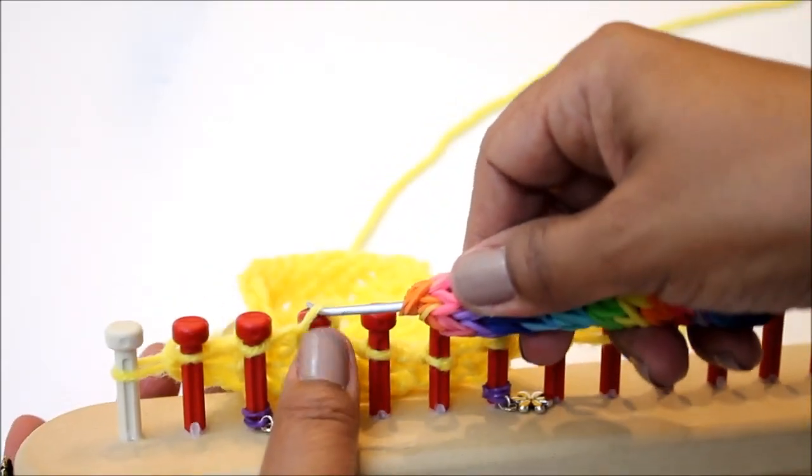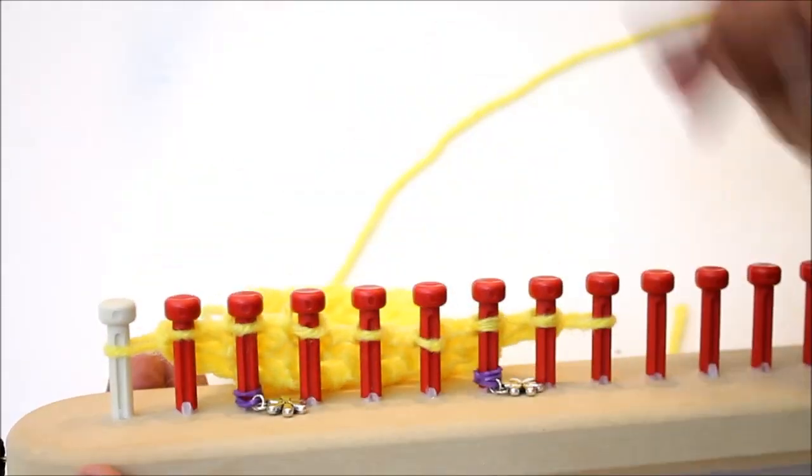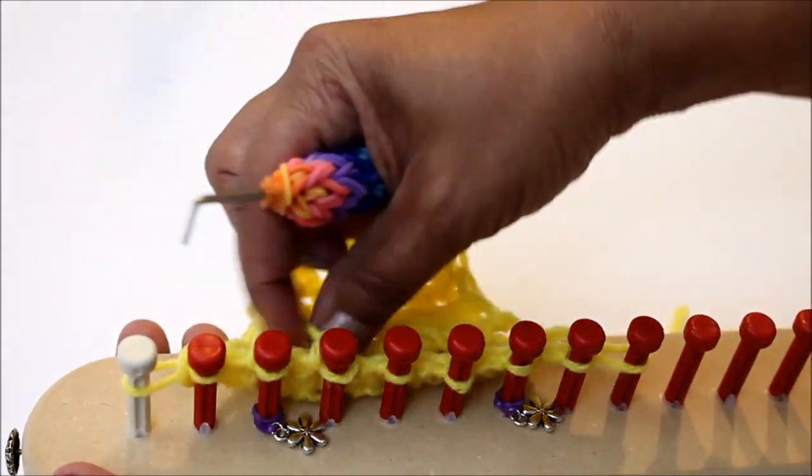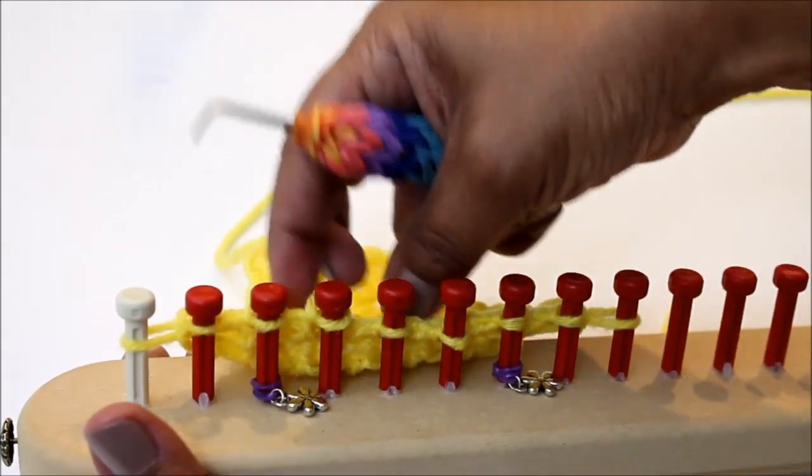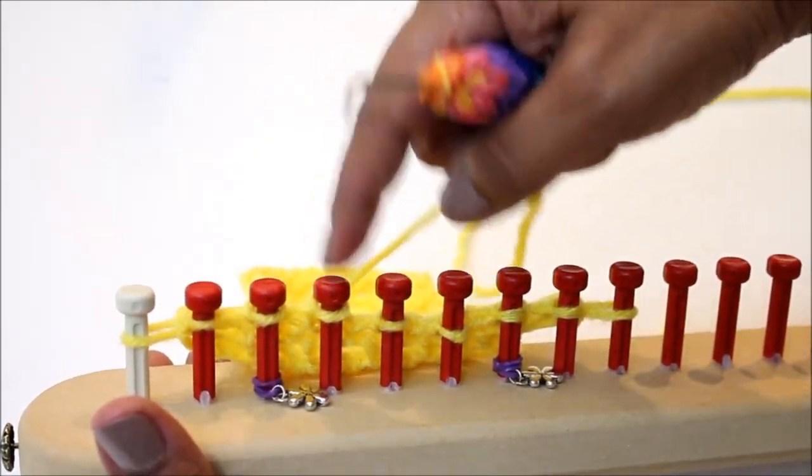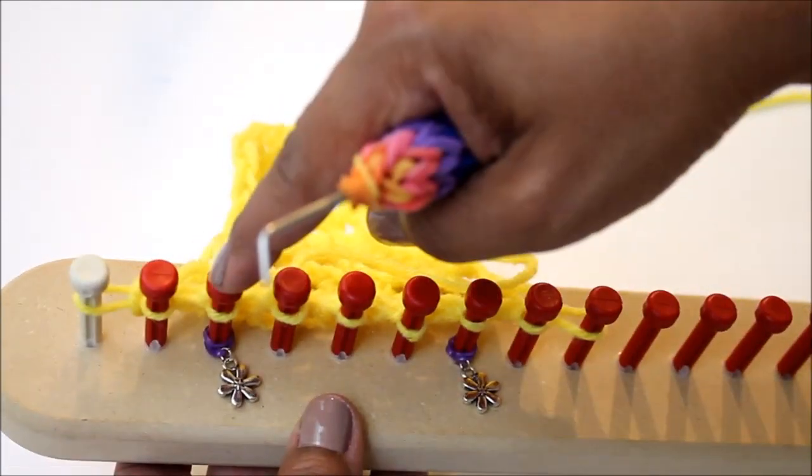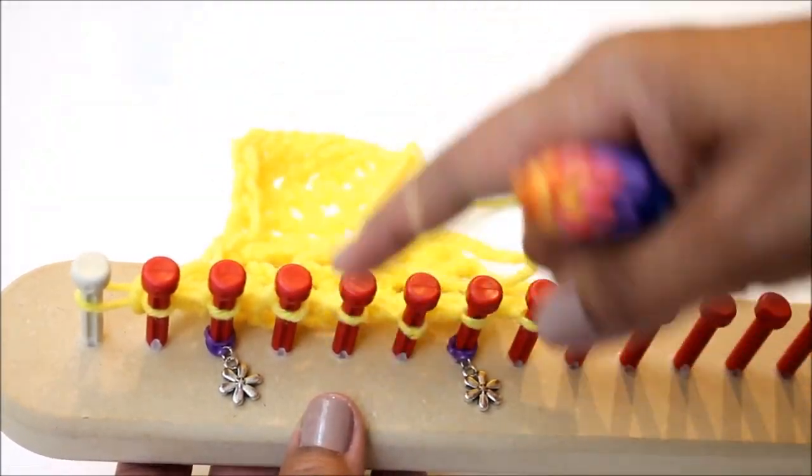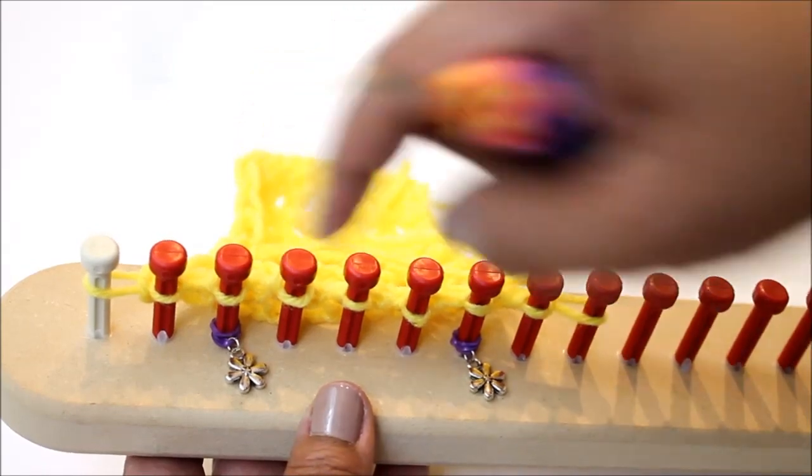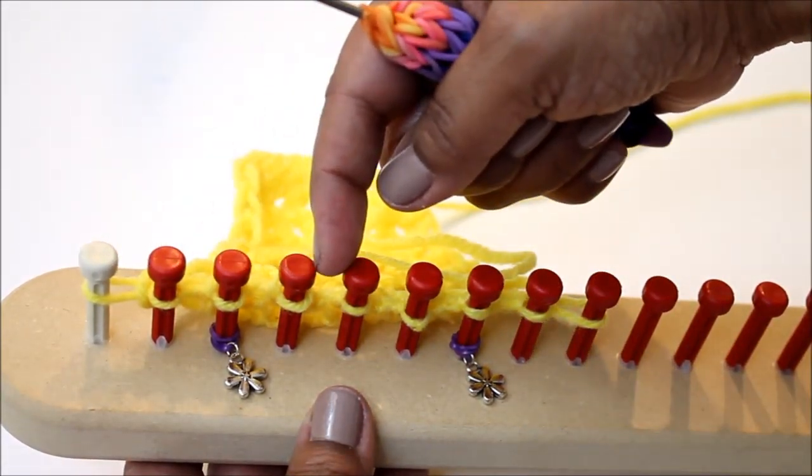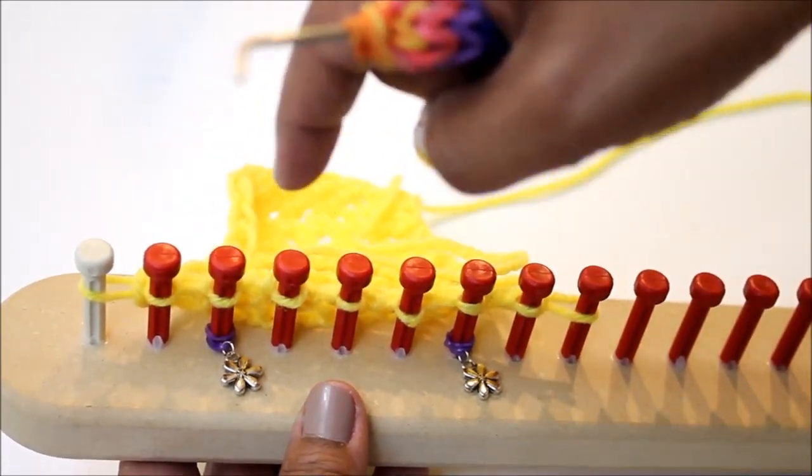All right, you're going to knit them off. And remember that the rule is wherever your yarn is, that is your peg two. So this now is your new peg two. And if you notice, this is where you started. So you've only moved forward only one peg even though you've knitted three of them. You only move forward one.